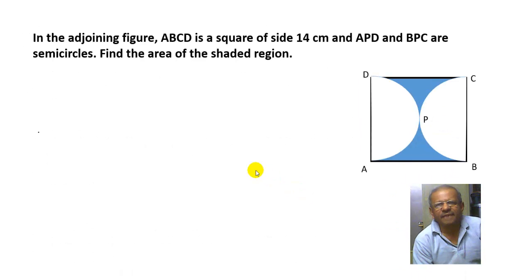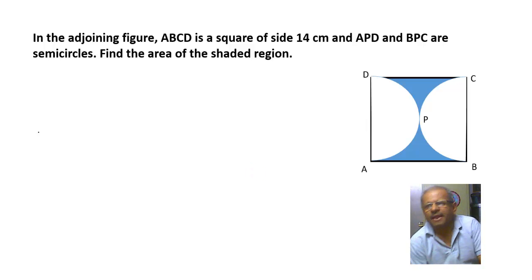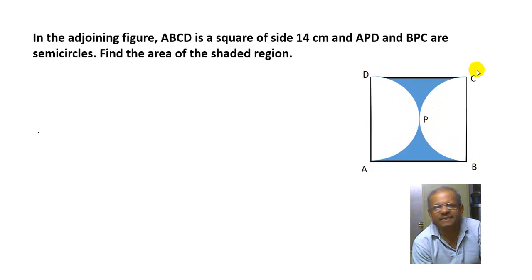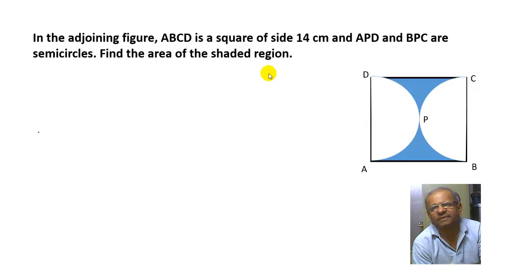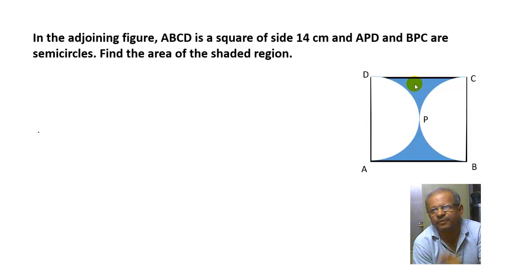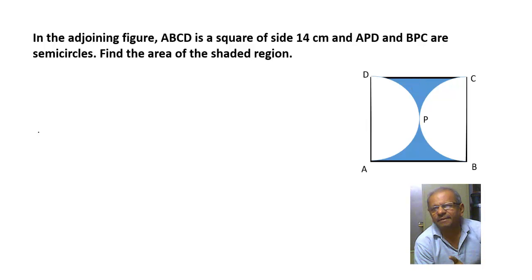Now we will see another question. In the adjoining figure, ABCD is a square of side 14 centimeters, and APD and BPC are two semicircles. Find the area of the shaded region. The bluish portion is the shaded region and we have to find its area. That can be calculated by taking the area of square ABCD.